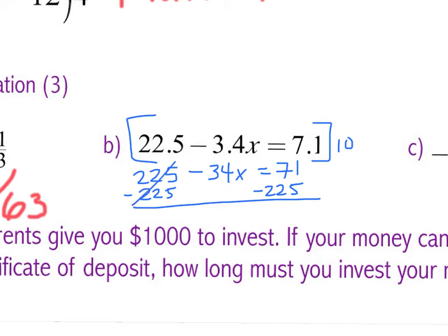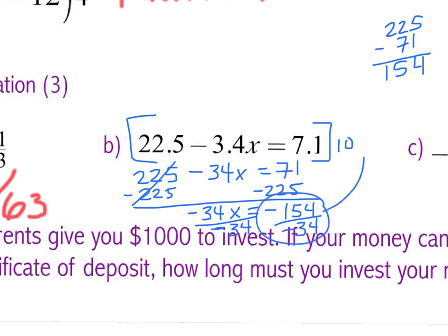So once I, not delete, subtract that, negative 34x equals 71 minus 225. What's 71 minus 225? What do I really have to do? I have to flip it and then it's 1, what'd you say, 154? So negative 154. And then it would be to do what to both sides, the last step on this one? Divide by? Careful. Negative 34.